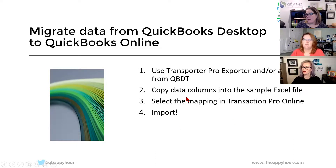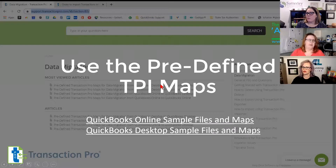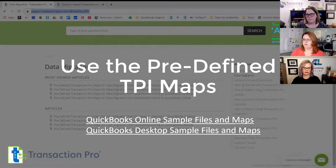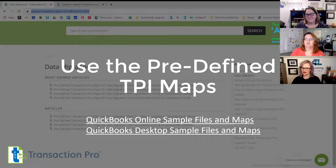You can copy the data columns into a sample Excel file, select the mapping in Transaction Pro Online, and then import. The predefined Transaction Pro maps — Michelle, you had said that not all of the QuickBooks Online ones have been uploaded yet, towards the end of next week those will be. Right now we can share our desktop maps but not the online maps — development is working on that. I've been told at least by end of month, but supposedly by end of next week we'll be able to start sharing those files, which will help you during your data migrations.